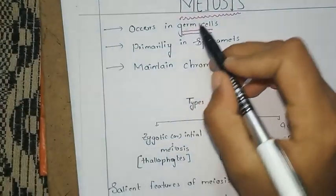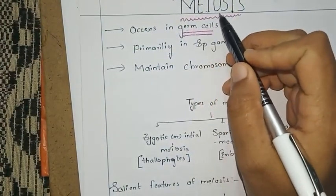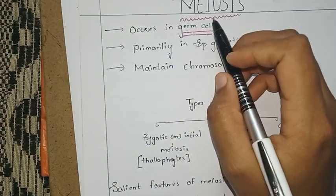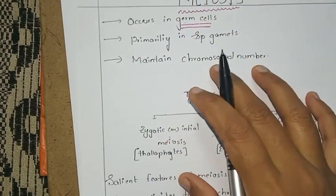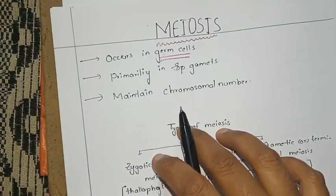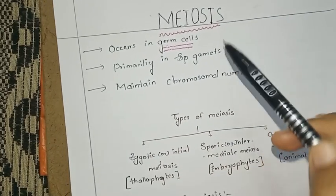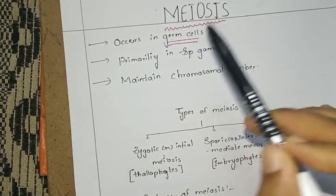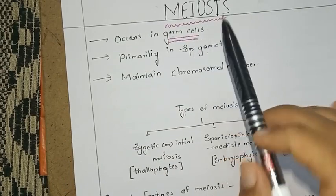Today, we will talk about meiosis. Meiosis occurs only in reproductive cells. Reproductive cells are found in ovaries, testes, and somatic cells. Meiosis is constantly maintaining the chromosomal number.